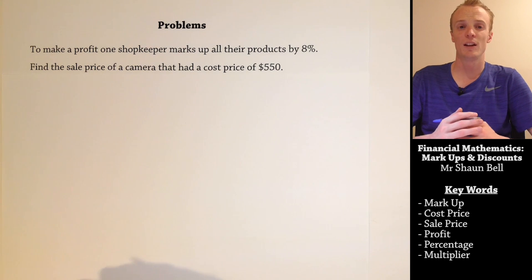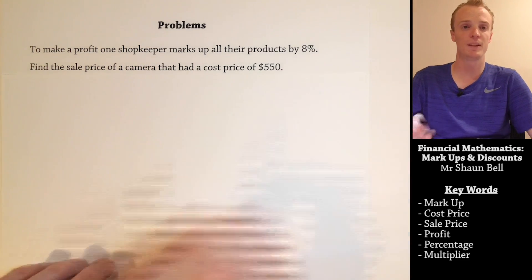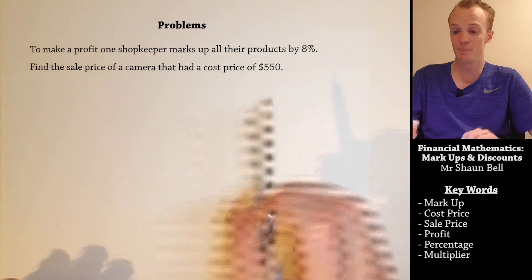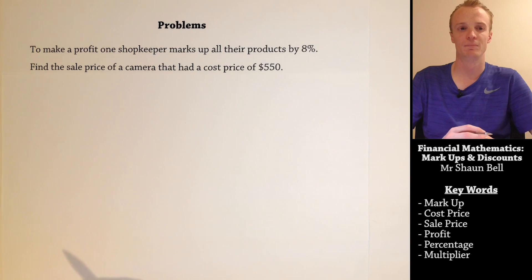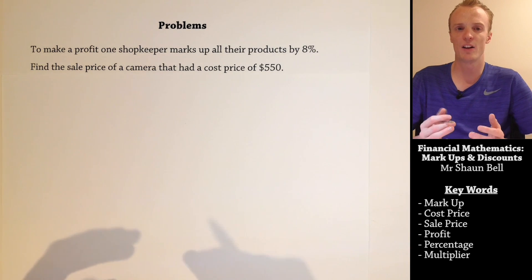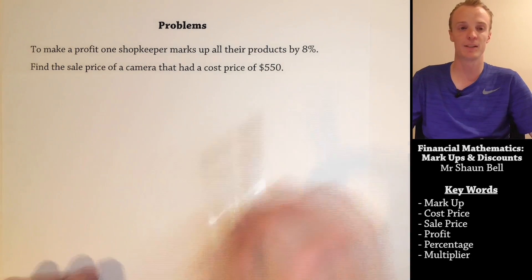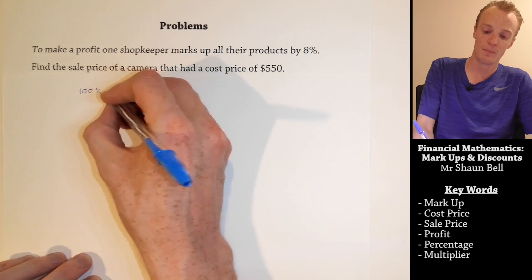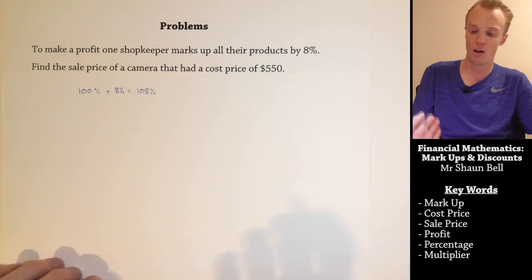When we are applying a markup, essentially we are increasing the price of the product by that markup percentage. In this case, the markup percentage is 8%. To find the new sale price of the item, we could first work out what 8% of $550 is and then add it on. However, there is a quicker method. If we consider the cost price of $550 to be our 100% amount, our sale price is that 100% plus an extra 8% for the markup. Therefore, our sale price will be 100% plus 8%, which equals 108% of the cost price.